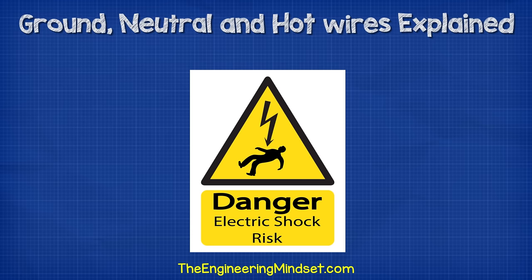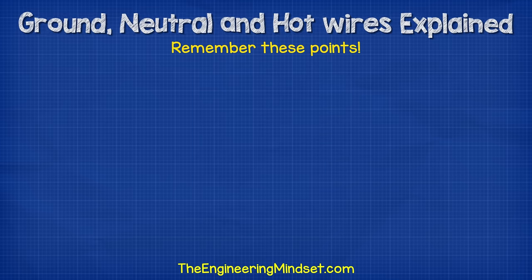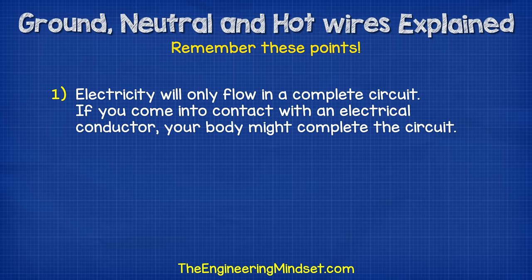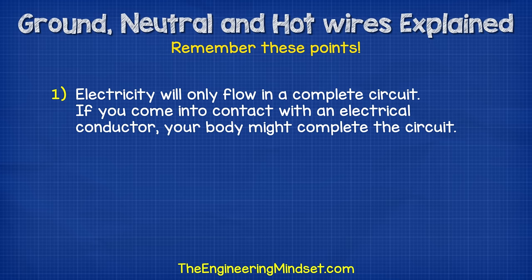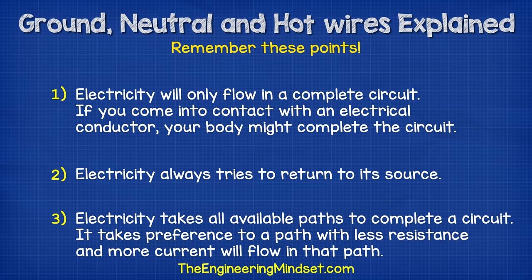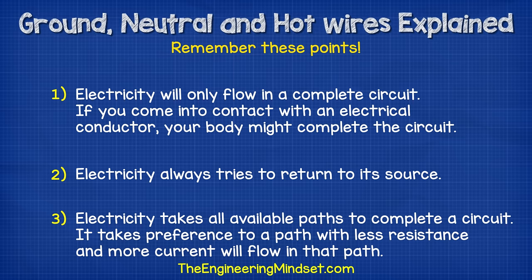Remember, electricity is dangerous and can be fatal. You should be qualified and competent to carry out any electrical work. Before we get into this video there are three things I need you to remember. Number one: electricity will only flow in a complete circuit — if you come into contact with an electrical conductor your body might complete the circuit. Number two: electricity always tries to return to its source. And number three: electricity will take all available paths to complete a circuit, but it will take preference to a path with less resistance, and so more current is going to flow in that path.